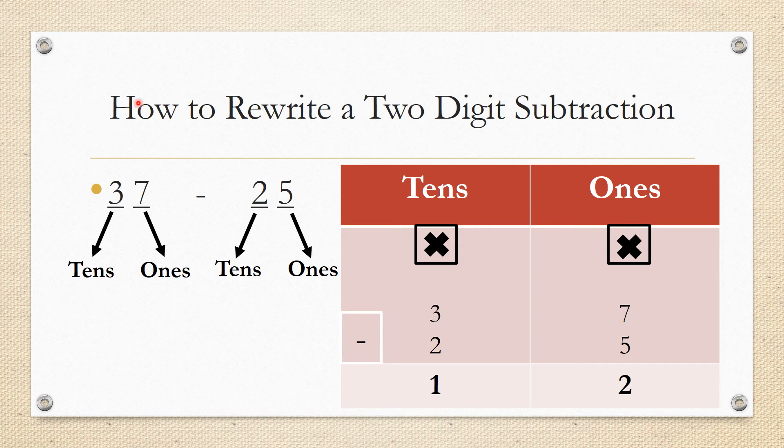Let's take a look at this example. I have 37 minus 25, so also here I will look at my numbers and put the ones in the ones and the tens in the tens. In 37, the 7 is in the ones place and the 3 is in the tens place. In 25, the 5 is in the ones place and the 2 is in the tens place.